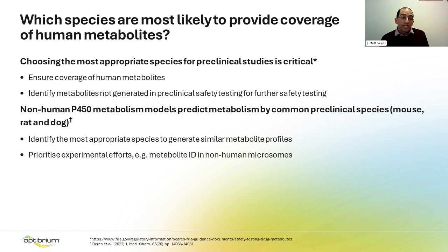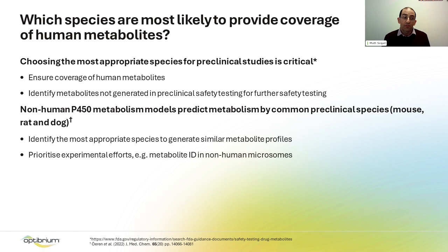One reason this is very important is that choosing the most appropriate species for preclinical studies is absolutely critical. We need to ensure coverage of human metabolites in our animal models, and if they're not generated in our animal models, we do need to identify those and potentially synthesize them for further safety testing.